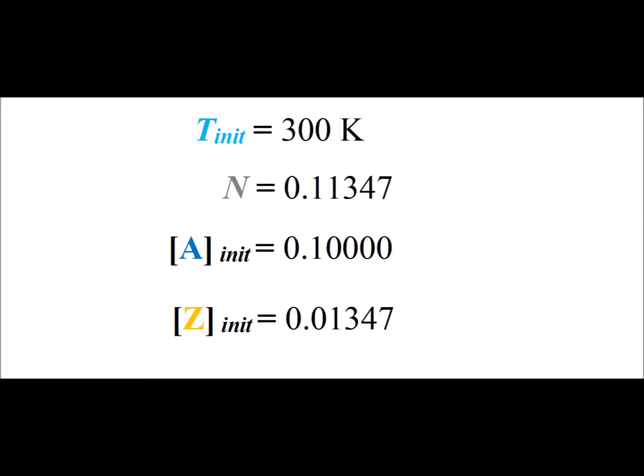At this initial temperature, the value of N is 0.11347. That gives the initial equilibrium concentration of A as 0.1 molar, and the initial equilibrium concentration for the product Z is 0.01347.